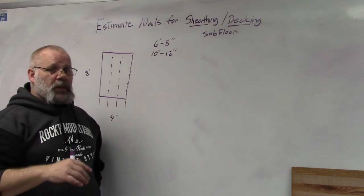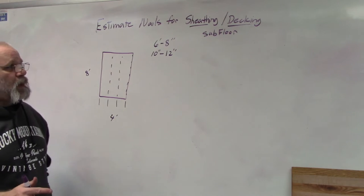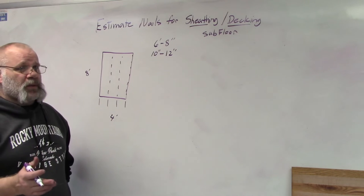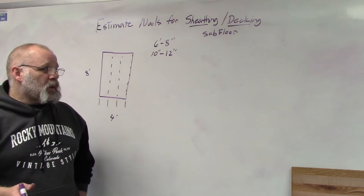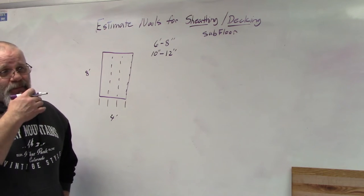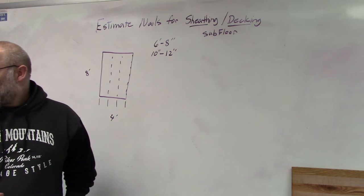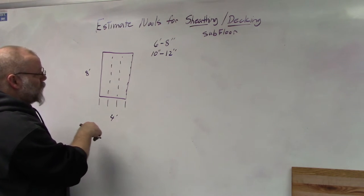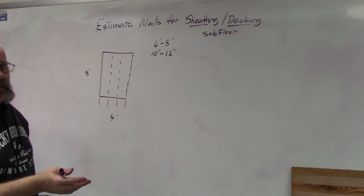This is the minimum code. If you live in a high wind area, such as Florida with hurricanes, Louisiana with hurricanes, or California with earthquakes, they may say we've got to add more nails to stiffen this up and make it stronger. We'll use these minimums, and if your area is different you can add.